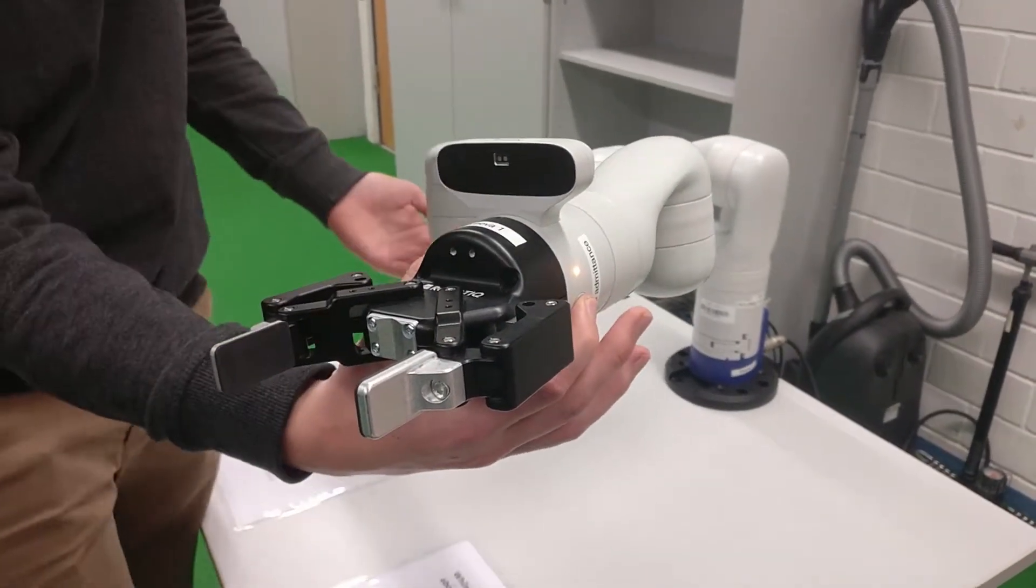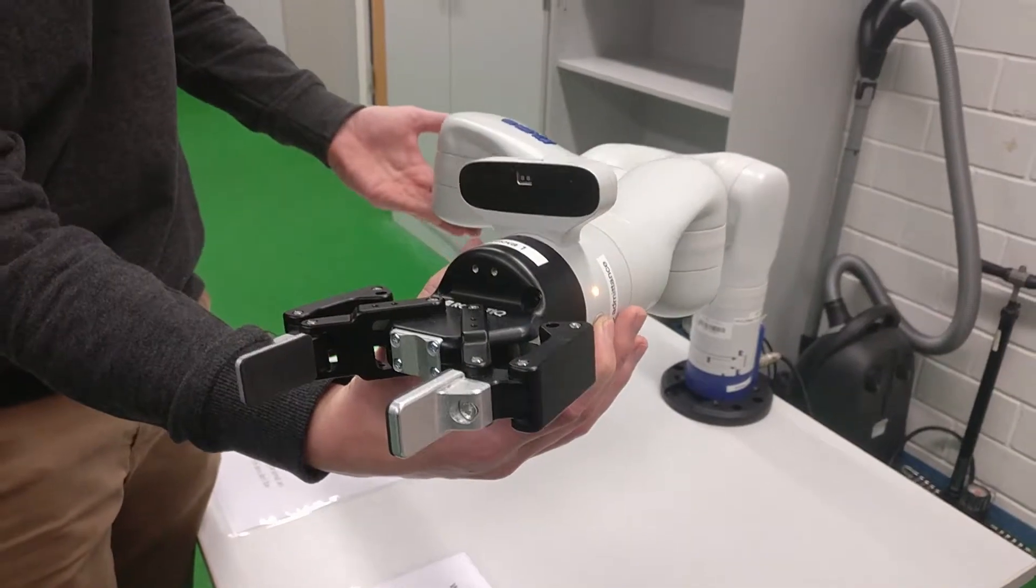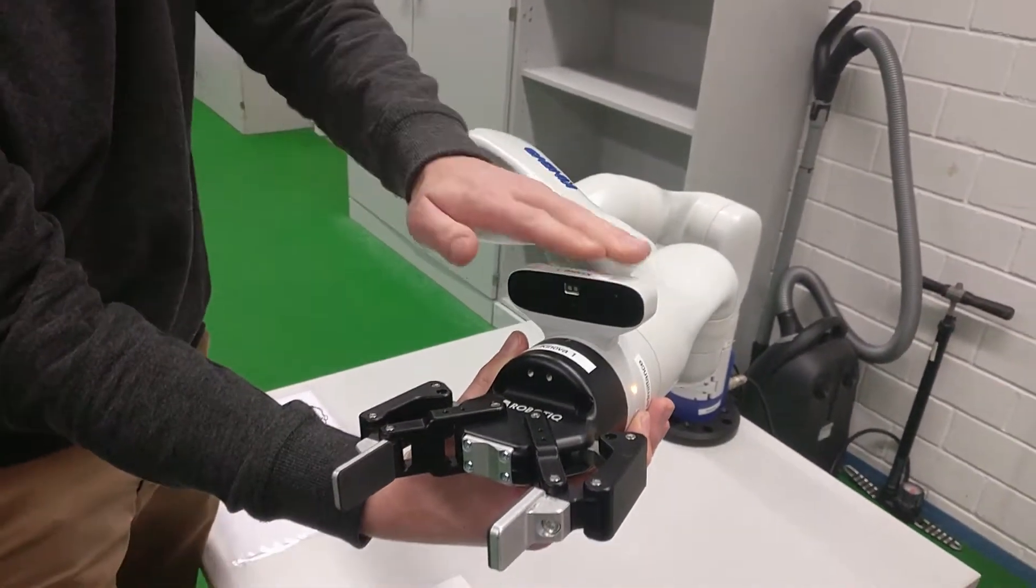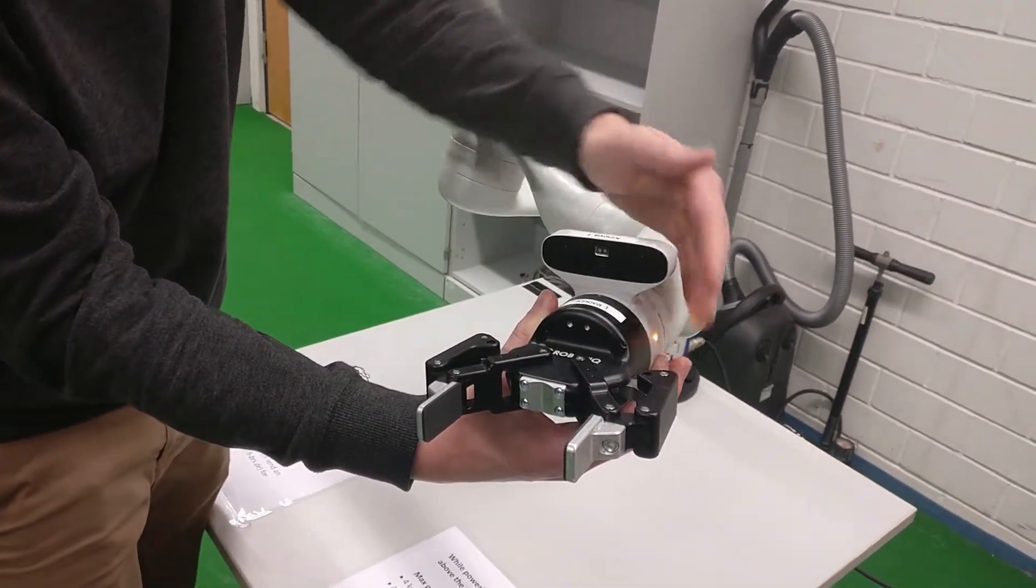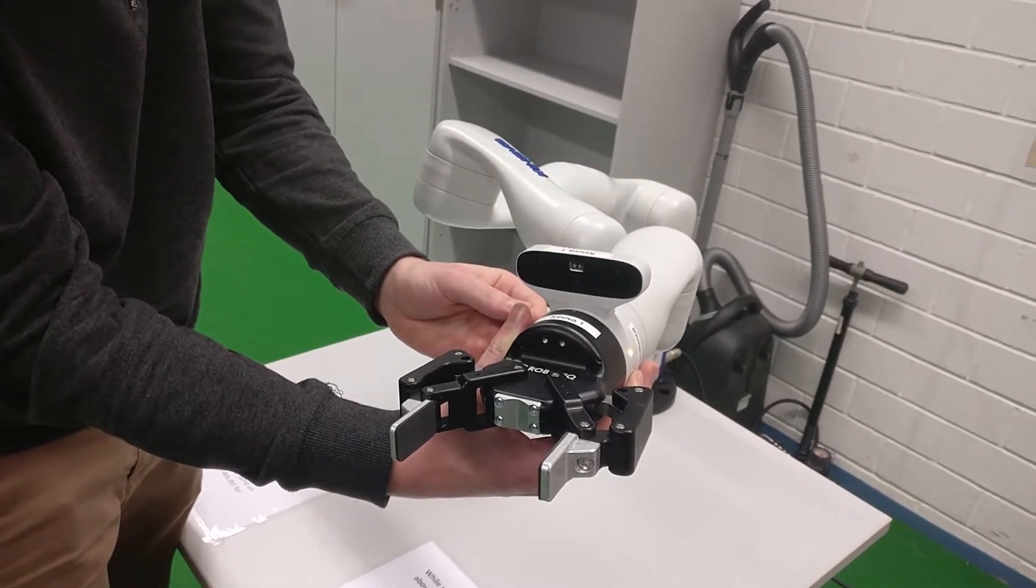So if I press this, I can now rotate the arm. But if any force is applied to the end effector, the controller compensates.